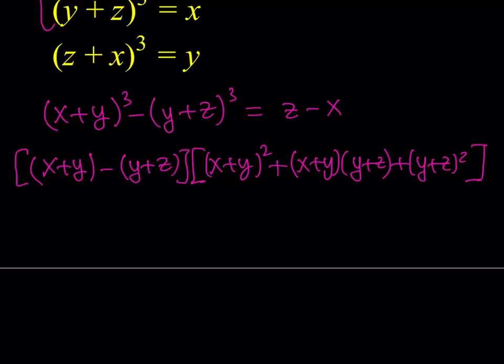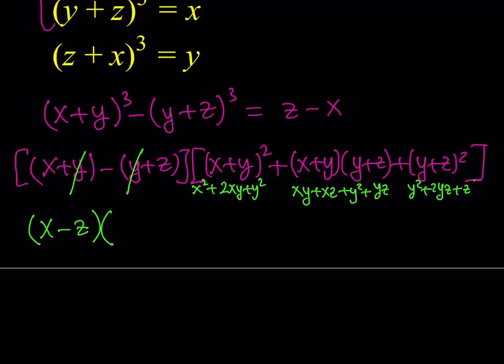Here, notice that the y is going to cancel out. Y cancels out. We end up with x minus z. Now, in order to make this easier, let me expand this. This is x² + 2xy + y². This is xy + xz + y² + yz. And this is y² + 2yz + z². Then I can add like terms.